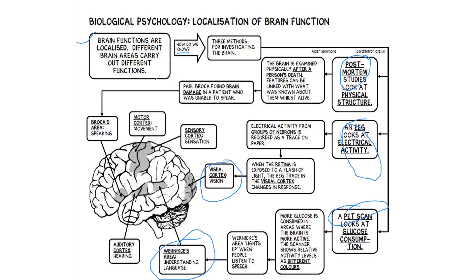In the post-mortem study, we compare what was observed in the brain with what the person experienced when alive. Paul Broca found brain damage in a patient who was unable to speak, confirming that Broca's area is responsible for speaking. With EEG, we record activity from a group of neurons; when the retina is exposed to a flash of light, the EEG trace of the visual cortex changes, telling us that the visual cortex is responsible for vision.